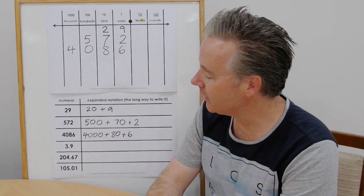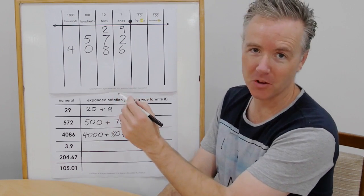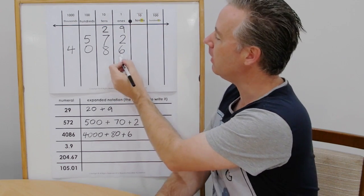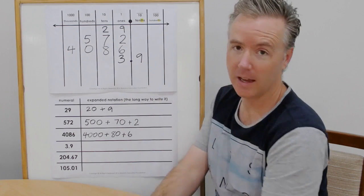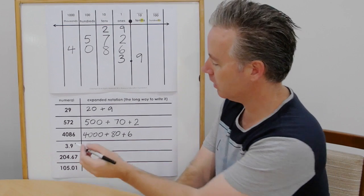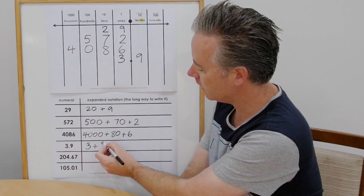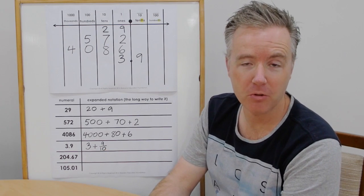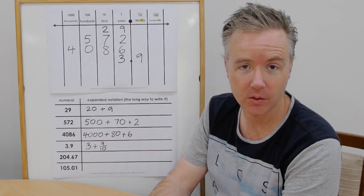The next one we have is three and nine-tenths. A lot of people would say three point nine. The problem with three point nine, of course, we're not using our correct column terminology. So we'll write in three, put in the decimal point, and nine-tenths. So now let's write that in expanded notation. We have three and nine-tenths. Now if you would prefer to write that as a decimal, as opposed to a fraction, this is what it would look like.